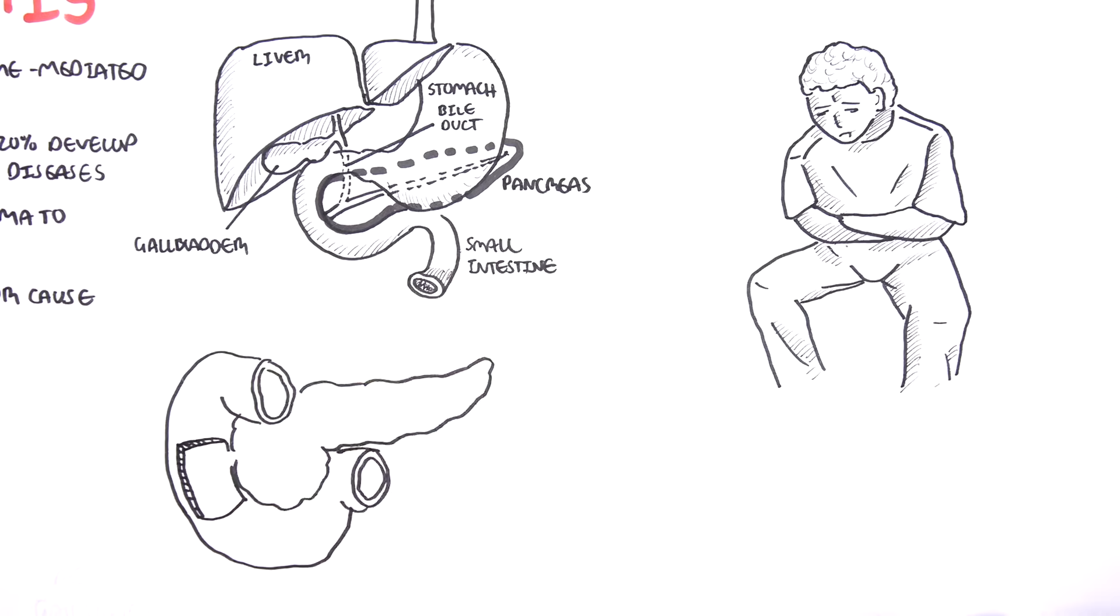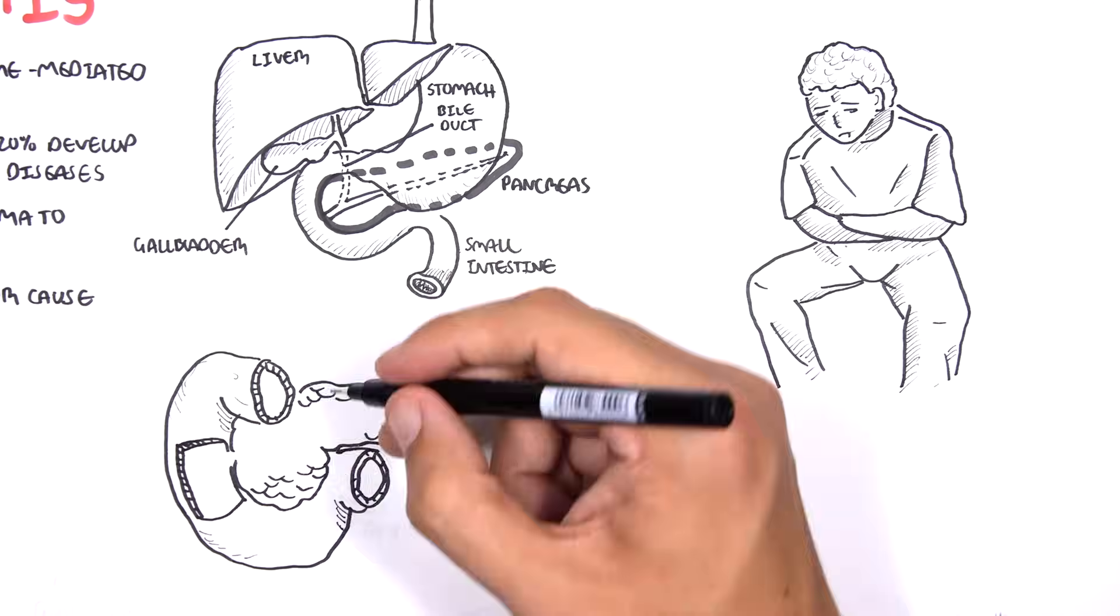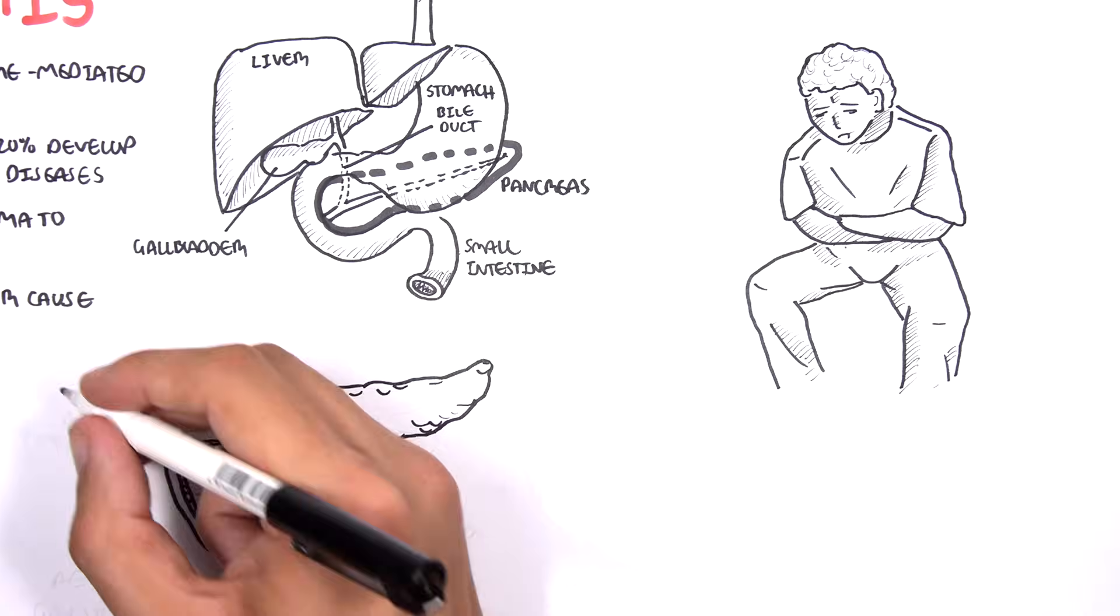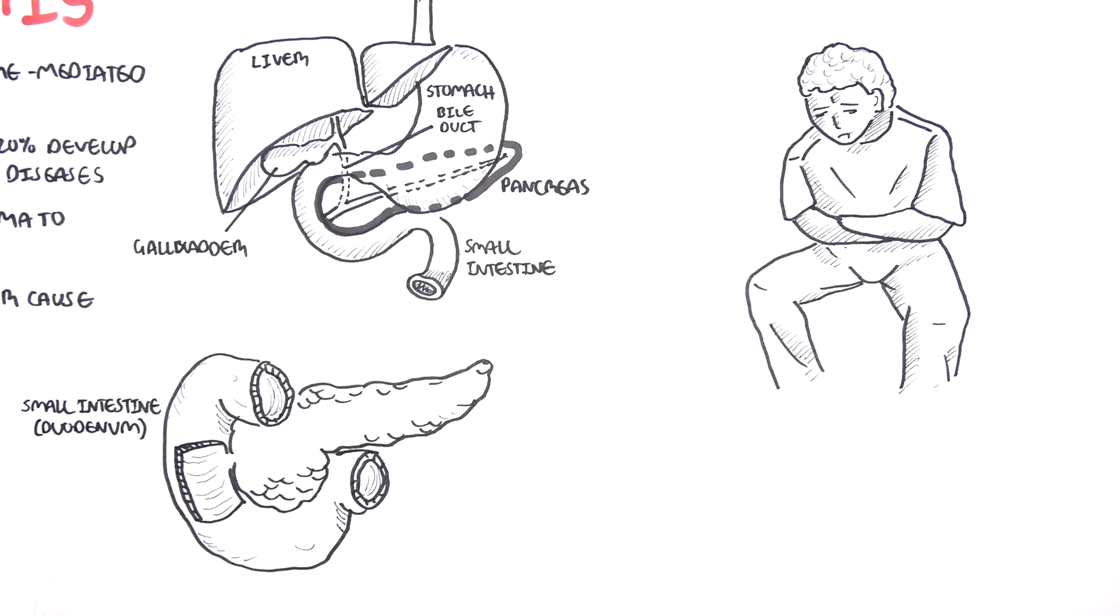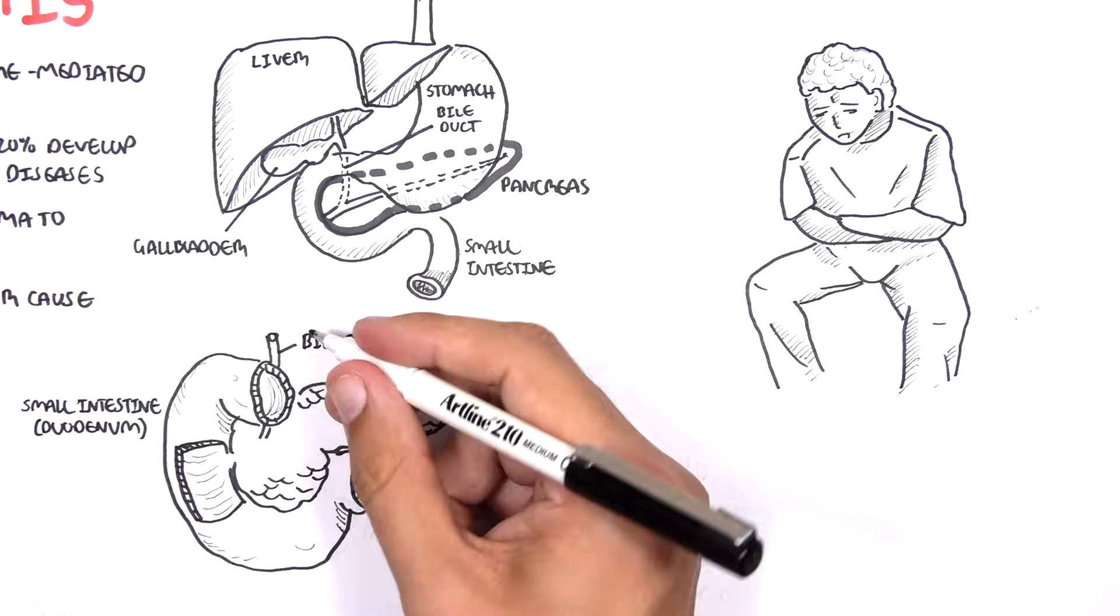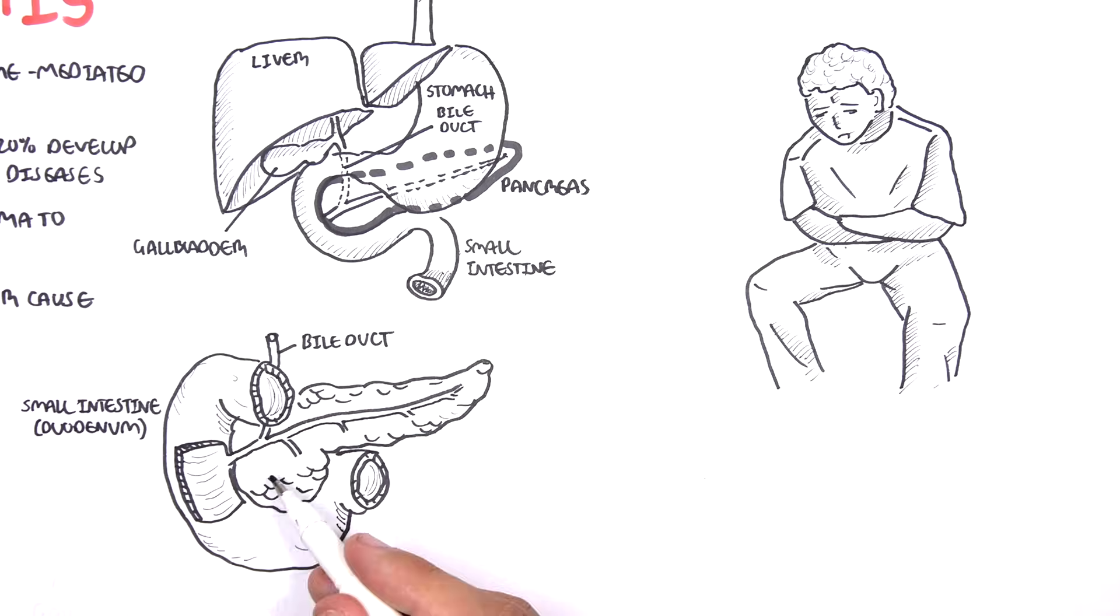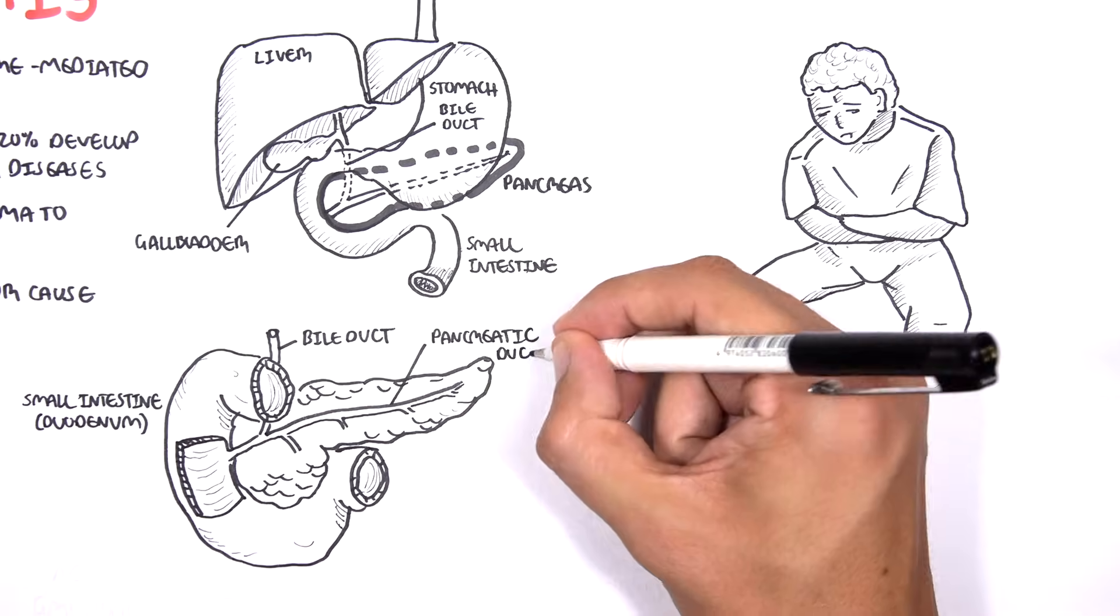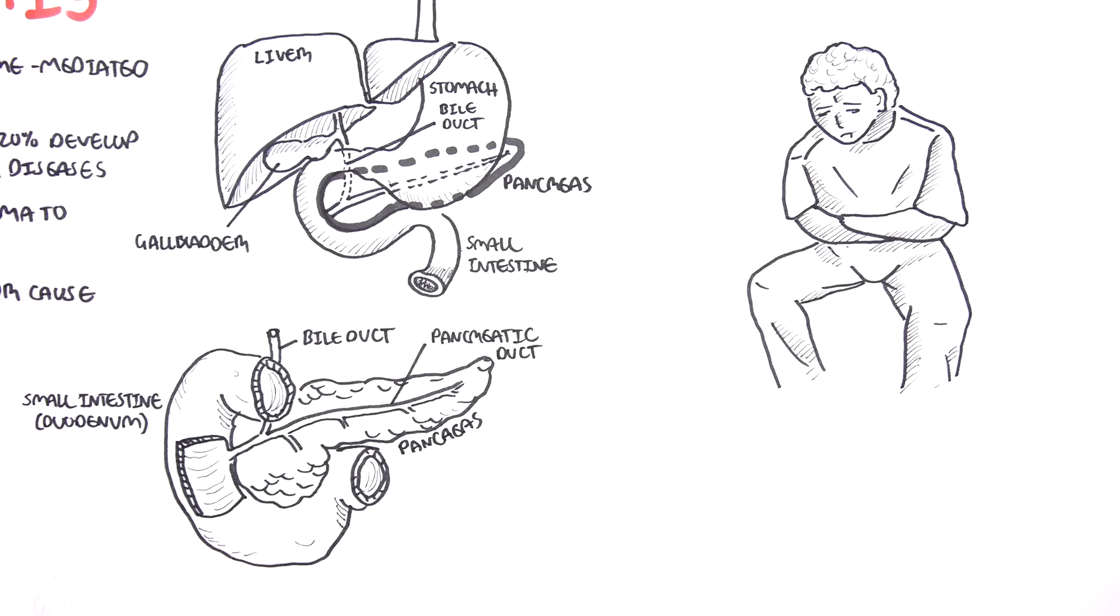This is a close up image of the pancreas. The pancreas makes contact with the duodenum which is the first part of the small intestine. The bile duct from the gallbladder and liver connect with the pancreatic ducts which then makes its way to the duodenum.